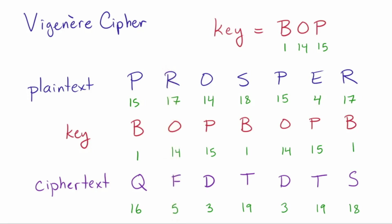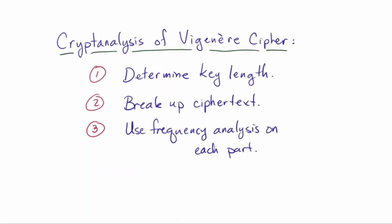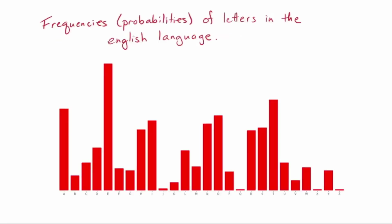The purpose of this video is to describe how to break a cipher text without having the key — this is called cryptanalysis. To break a Vigenère cipher, there are three steps. First, we have to figure out the key length. Then we can use that to break up the cipher text according to the key length. And finally, we use frequency analysis on each part. Before we begin, let me point out that we are assuming the plain text is randomly chosen English, not just a random string — that's going to be essential to everything that we do.